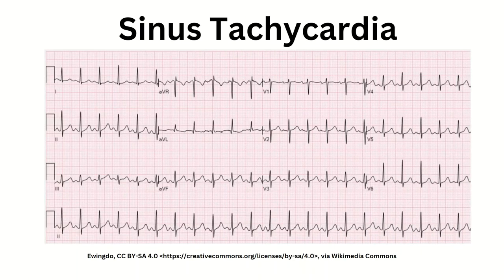Next, we have sinus tachycardia, which is characterized by a heart rate above 100. Each beat is started with a P wave, followed by a QRS, and followed by a T wave — it looks a lot like normal sinus rhythm, but the heart rate is faster than 100. Note that if the heart rate is going higher than 150, it may not be sinus tachycardia; it may be another rhythm disturbance.